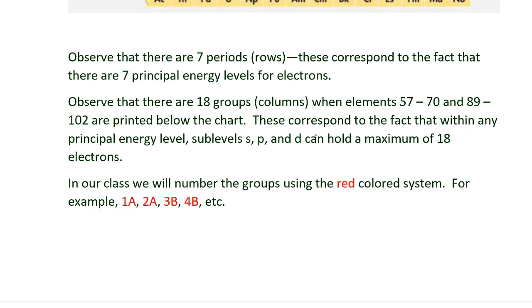The groups are numbered in three different ways at the top of the column. There are red numbers, black numbers, and even Roman numerals. In our class, we're going to use the United States way to number the columns, which are the red numbers.